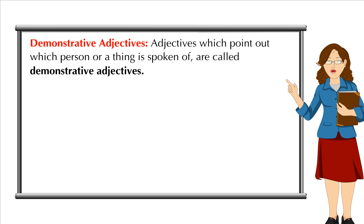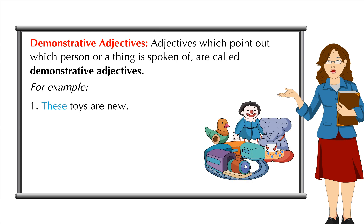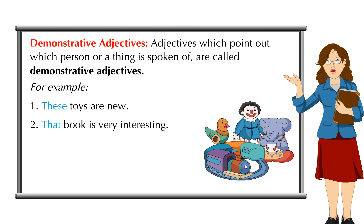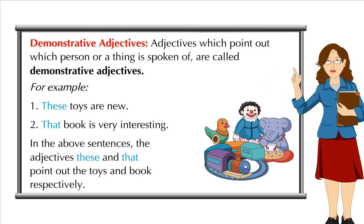Demonstrative Adjectives: Adjectives which point out which person or a thing is spoken of are called demonstrative adjectives. For example, these toys are new. That book is very interesting.